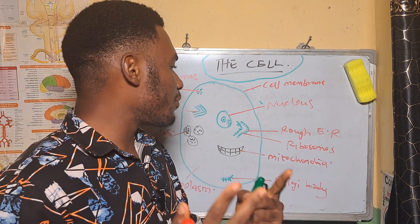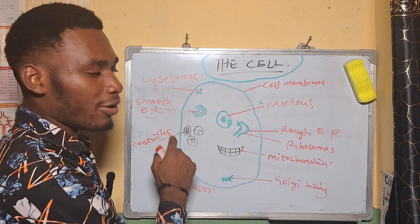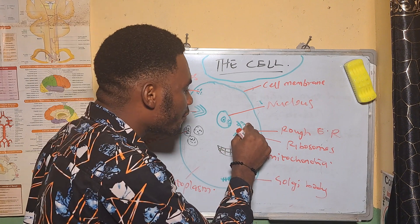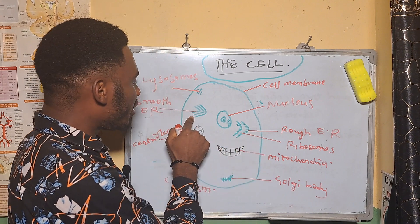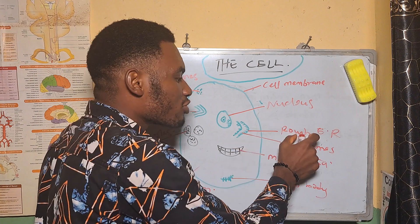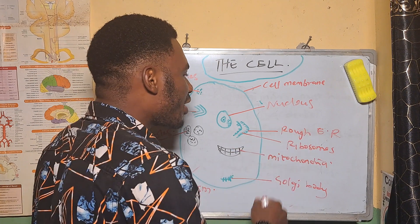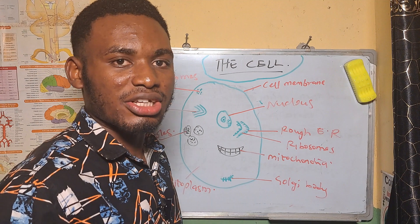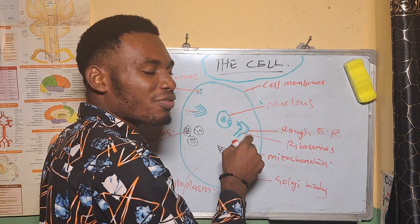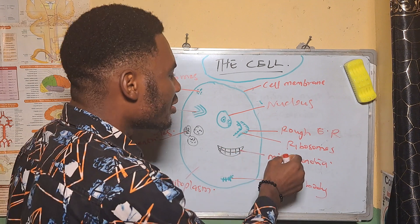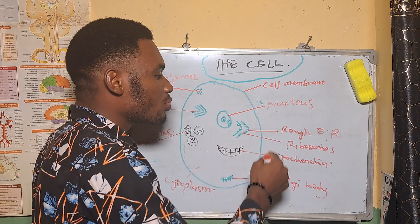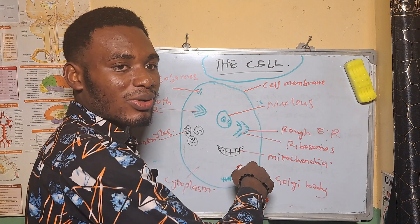In the animal cell we have two types of ER: the rough ER and the smooth ER. The rough endoplasmic reticulum is rough because there is a presence of ribosomes on its lining. On the body of the rough ER we have attachment of ribosomes. The rough ER helps to synthesize enzymes in the cell and also helps in protein transportation inside the cell. The ribosomes help in protein synthesis, and the rough ER helps to translocate these proteins inside the cell.